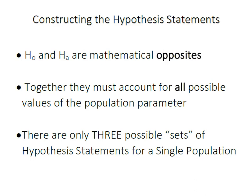First and foremost, HO and HA are mathematical opposites. In other words, together they have to account for all possible values of the population parameter. This results in there only being three possible sets or pairs of hypothesis statements when we test in a single population.